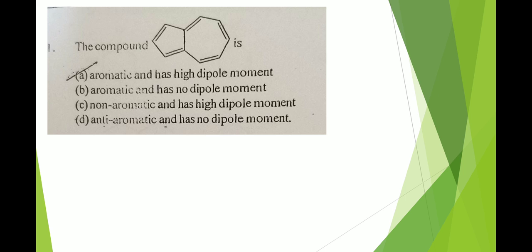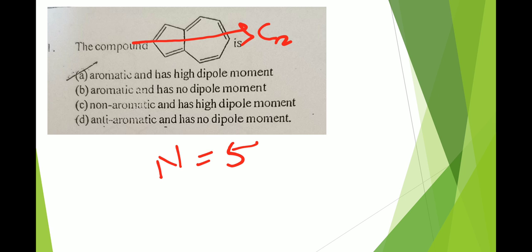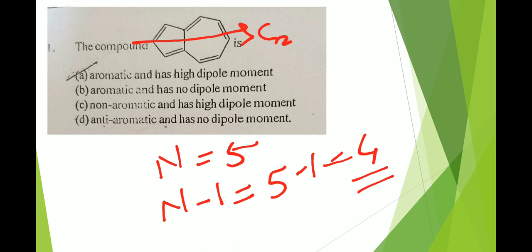This example is based on Craig's rule, applicable for polycyclic non-benzenoid systems. This compound does not contain a structure similar to a benzene ring, so it is a non-benzenoid system. We pass a C2 axis and calculate n — the number of double bonds — which is 5. Then n minus 1 equals 4, which is even, so the compound is aromatic. It also has a high dipole moment, therefore option A is correct.